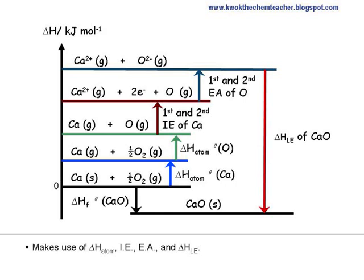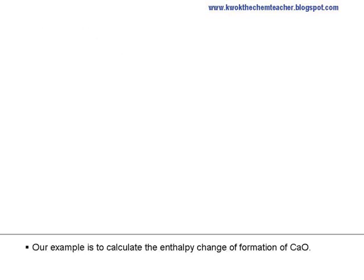It makes use of enthalpy change of atomization, ionization energy (IE), electron affinity (EA), and lattice energy. Our example is to calculate the enthalpy change of formation of calcium oxide.